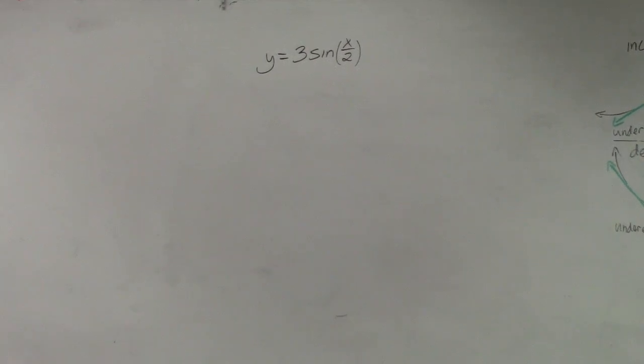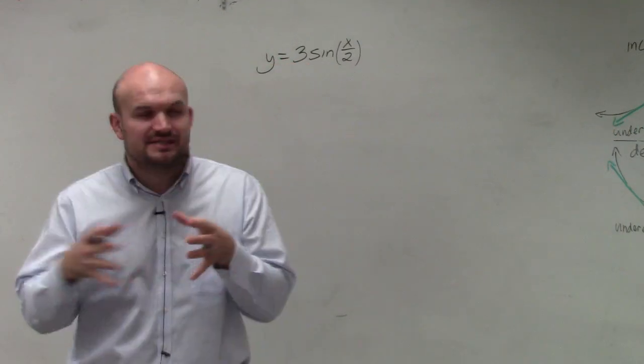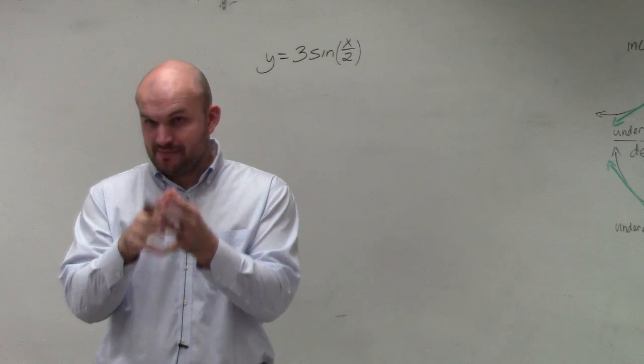So in this example, what we're looking into doing is identifying the amplitude, the period, and the frequency. The main important thing you need to know for sine and cosine is definitely those three things. Does that make sense? Good.